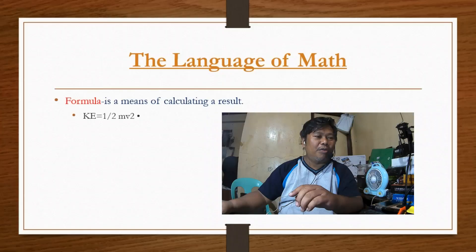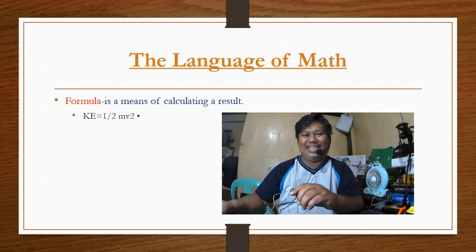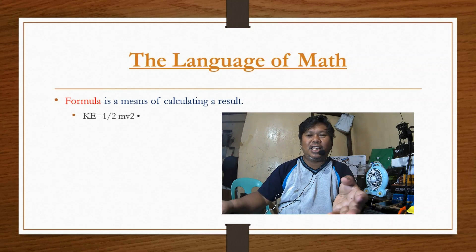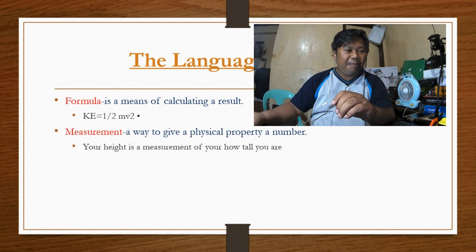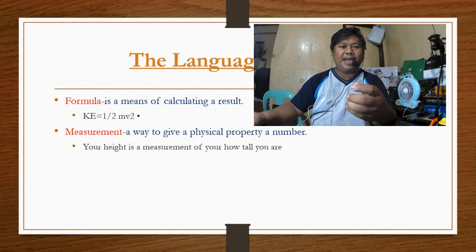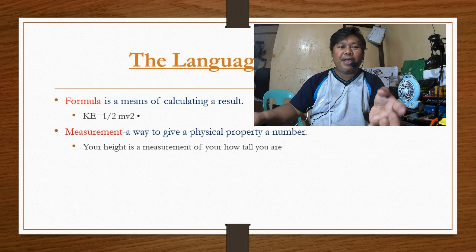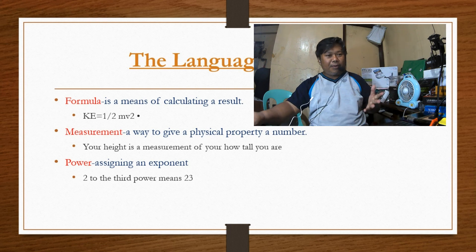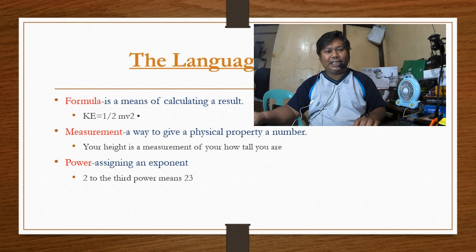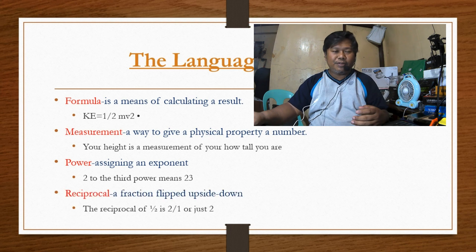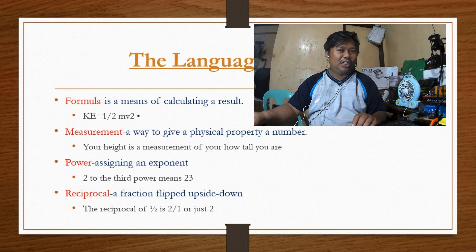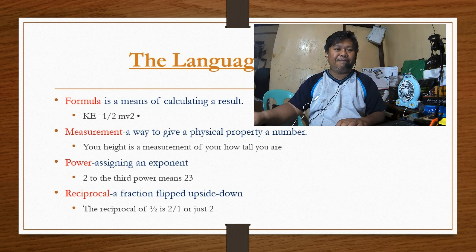Another common term in mathematics is formula — it means you are calculating a result. Measurement is a way to give a physical property a number; for example, your height is a measurement. Power means assigning an exponent — for example, two to the third power means 2 raised to 3, which equals 8. Reciprocal is a fraction flipped upside down.